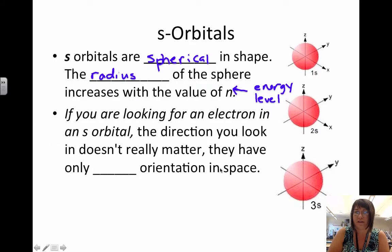So if you're looking for an electron in an s orbital, the direction that you look doesn't really matter because an s orbital has only one orientation in space. No matter how you turn this ball around, it's always going to look like just a little ball.